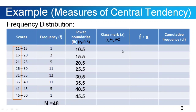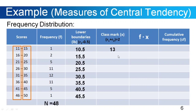Now let's go to the fourth column: class mark, represented by x. To get our class mark, simply add the first and second range values then divide by 2. So for row 1: 11 plus 15 equals 26, divided by 2 gives 13. For row 2: 16 plus 20 equals 36, divided by 2 gives 18. Then 21 plus 25 equals 46, divided by 2 gives 23, and so on.